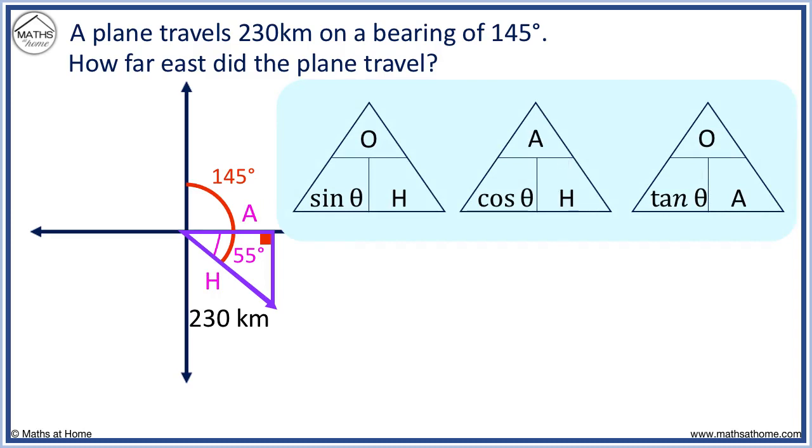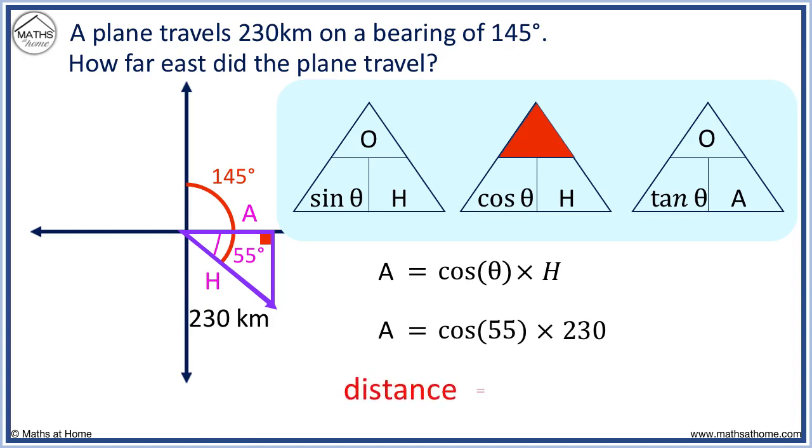We want A, so we cover up A. We have cos θ times H. θ equals 55 and H equals 230. We can work this out via calculator to get the distance equals 132 kilometers.